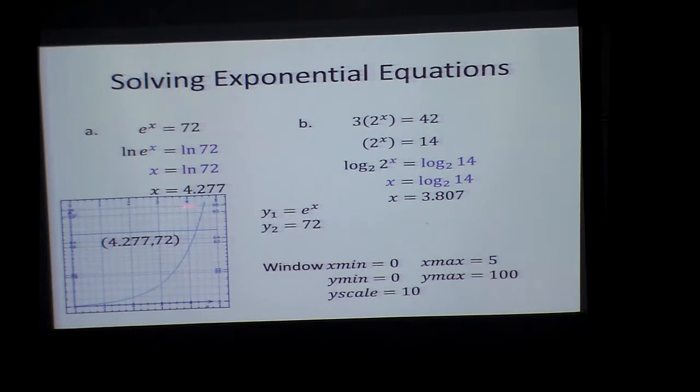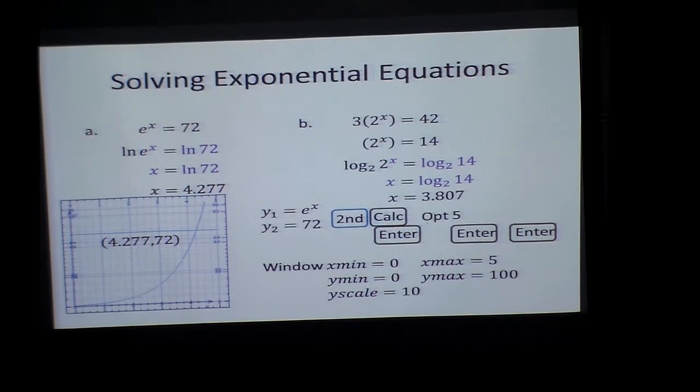Now I'm going to define that point of intersection. This is how you can solve it by graphing. I'll hit 2nd, calculate, option 5, enter, enter, enter. And when I do, that will appear right there. The x is 4.277.